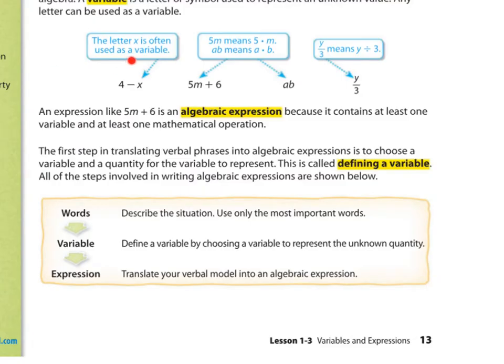An expression like 5M plus 6 is an algebraic expression because it contains at least one variable and at least one mathematical operation. So one variable with one mathematical operation, at least one, here's multiplication, and then we add. The first step in translating verbal phrases into algebraic expression is to choose a variable, any letter, and a quantity for the variable to represent. This is called defining a variable.